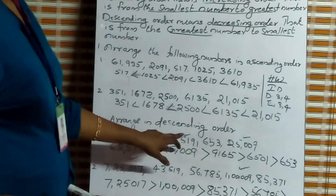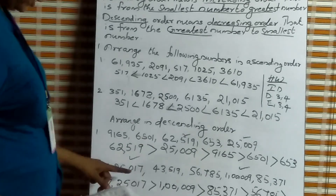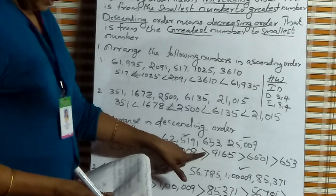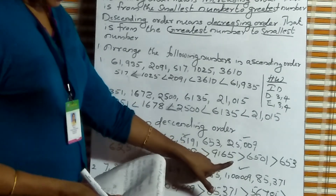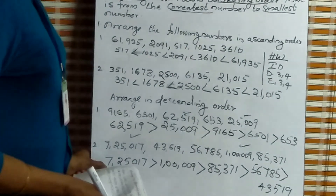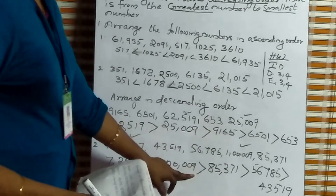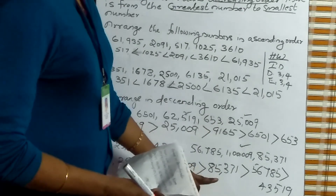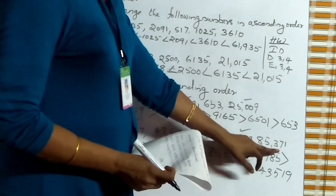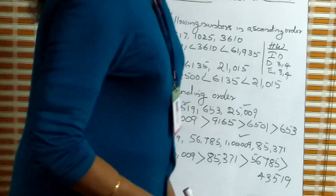Arrange in descending order. First answer: 62,519 greater than 25,009 greater than 9,165 greater than 6,501 greater than 653. And last question: 7,025,017 greater than 1,09,199 greater than 85,371 greater than 56,785 greater than 43,519. Thank you.